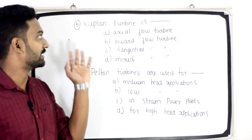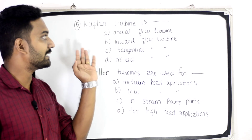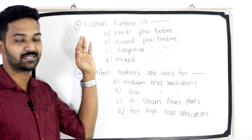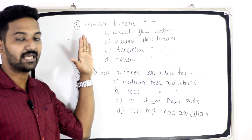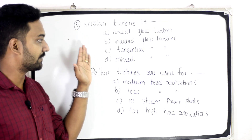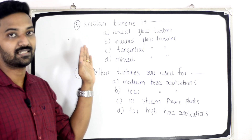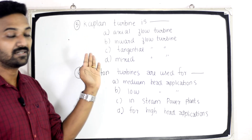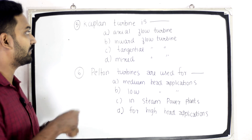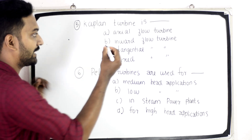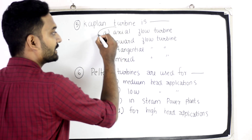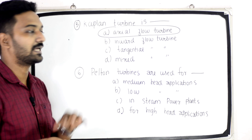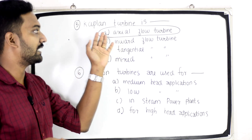Fifth question. Kaplan turbine is — Option A: Axial flow turbine. Option B: Inward flow turbine. Option C: Tangential flow turbine. Option D: Mixed flow turbine. Answer: Option A, Axial flow turbine.